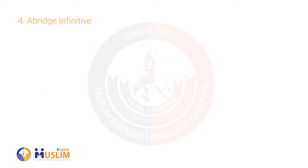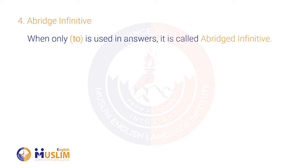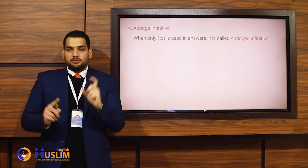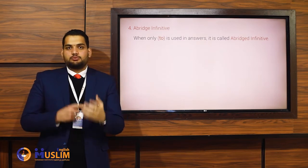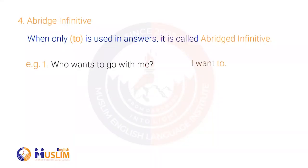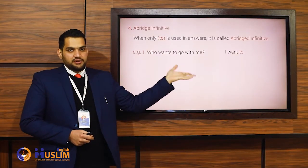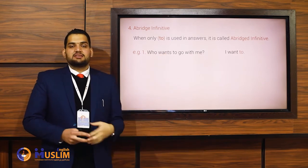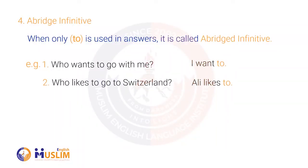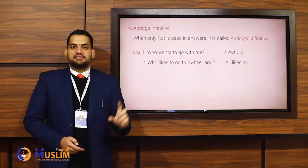The last sort of infinitive is abridged infinitive. When only 'to' is used in answers, it is called abridged infinitive. Sometimes it happens that we use only 'to' instead of 'to + verb,' especially in answers — that is called abridged infinitive because we have made it short. For example, someone asks 'Who wants to go with me?' and you say 'I want to' — not 'I want to go,' simply 'I want to.' That 'to' is an abridged infinitive. Another example: 'Who likes to go to Switzerland?' — 'Ali likes to.' The abridged infinitive is 'to.'